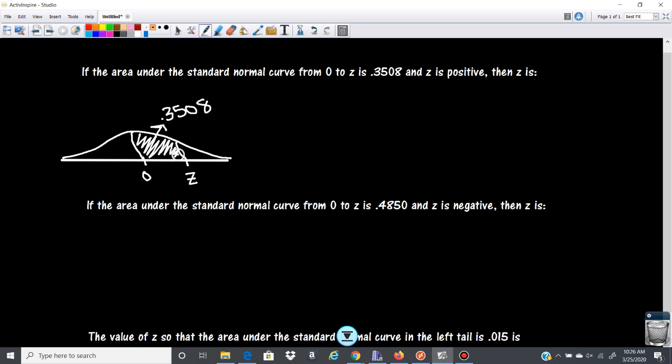Well, the z score is given to you as the area, okay, or the area to the left of the curve. Okay, so if I take this and I add the rest of the area to the left, I should be able to find the z score.